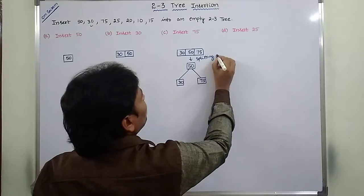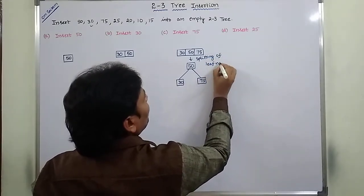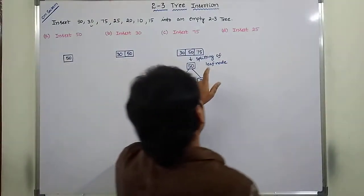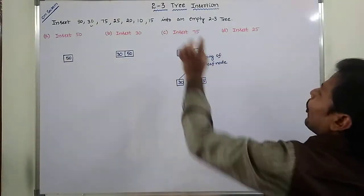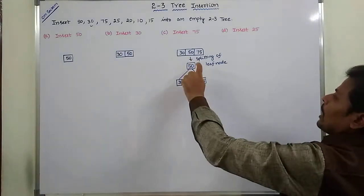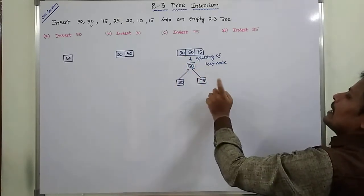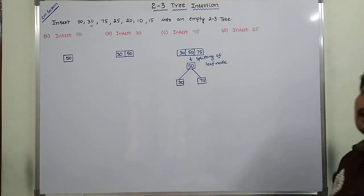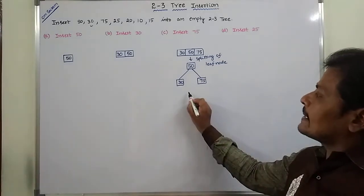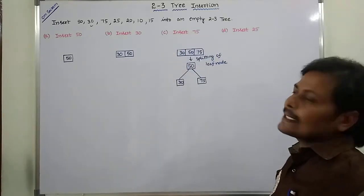Splitting of the leaf node is performed. After splitting, the middle element is promoted as parent. The middle element is 50, so 50 becomes the parent. 30 is the left child of 50, and 75 is the right child of 50. This is now a valid 2-3 tree after inserting 75.